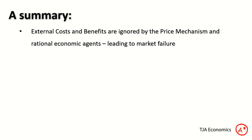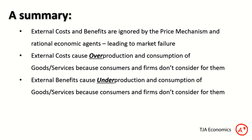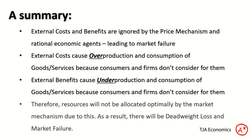To summarise: external costs and benefits are ignored by the price mechanism and rational economic agents, leading to market failure. External costs — think smoking, polluting companies — cause overproduction and overconsumption of goods and services because consumers and firms don't consider them. A rational firm does not consider the external cost of pollution when making supply decisions. External benefits cause underproduction and under-consumption for a similar reason: when I go to the gym, I'm not rewarded for and don't consider the external benefits I create, so I underconsume. Therefore, resources will not be allocated optimally by the market mechanism, resulting in deadweight loss and market failure.